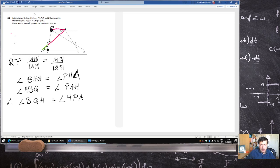So the triangle GHQ is similar to the triangle PHA.